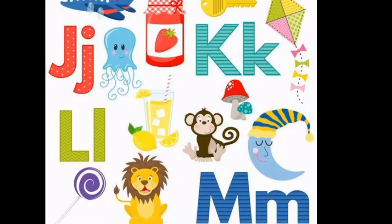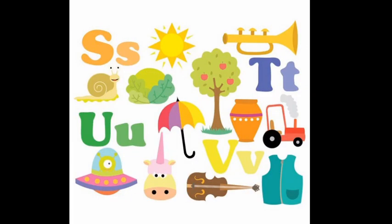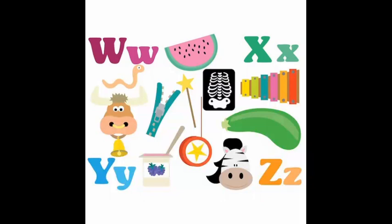U is for umbrella. U, U. Umbrella. V is for van. V, V. Van. W is for watch. W, W. Watch. X is for box. X, X. Box. Y is for yellow. Y, Y. Yellow. Z is for zebra. Z, Z. Zebra. A, A. Alphabet.